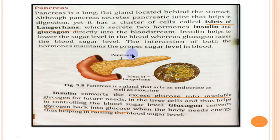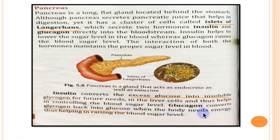If there is excess glucose in the blood, insulin stimulates the cells so that glucose is converted to glycogen, thus decreasing blood sugar level. Whereas glucagon converts glycogen stored in the liver back into glucose when the body cells need energy, thereby raising the blood sugar level. In this way, they maintain the blood sugar level in the body.